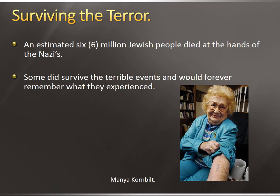An estimated six million Jewish people died at the hands of the Nazis — from SS troops, labor camps, ghettos, and especially the death camps. Some did survive this terrible ordeal and would forever remember what they experienced. This woman, Mania Cornbelt, was a survivor of the Nazi reign of terror. She witnessed friends beaten and killed. You can see she's pulling up her sleeve to show a number tattooed on her arm — each prisoner was given a number instead of a name, tattooed for identification.